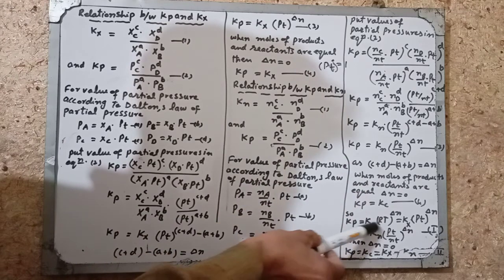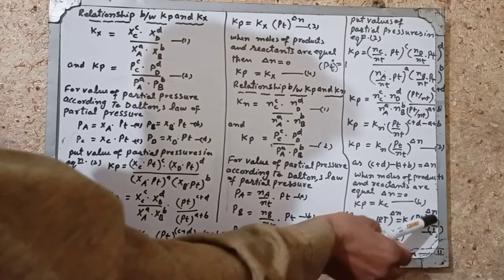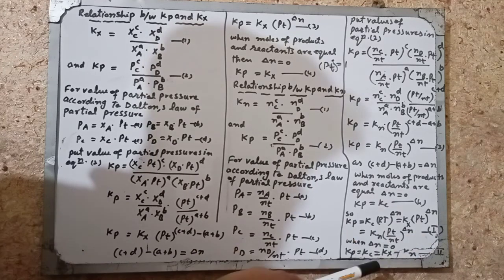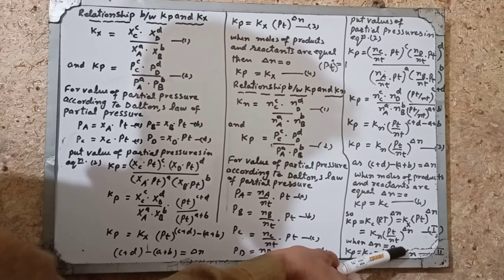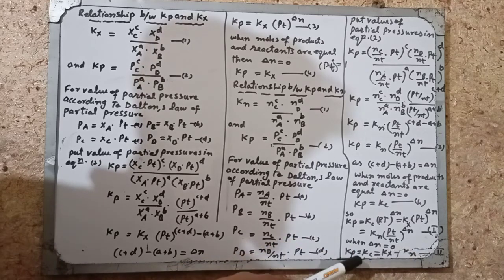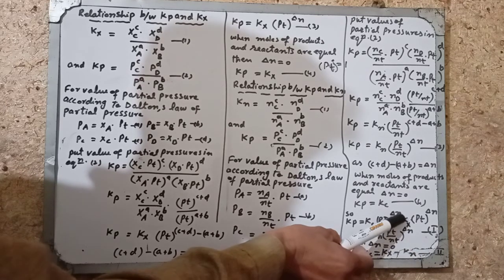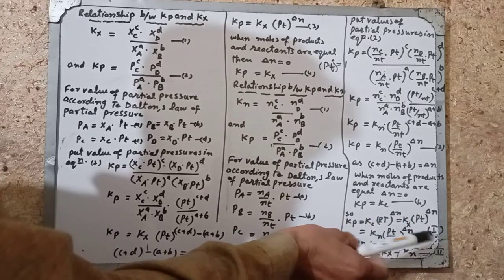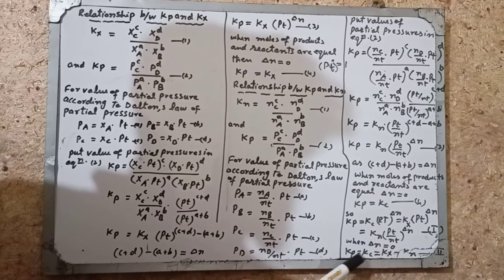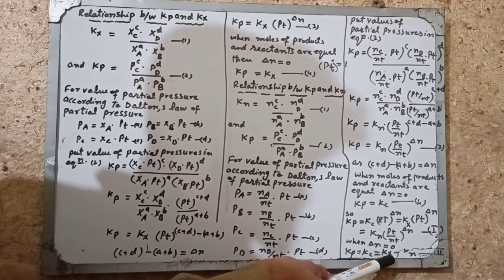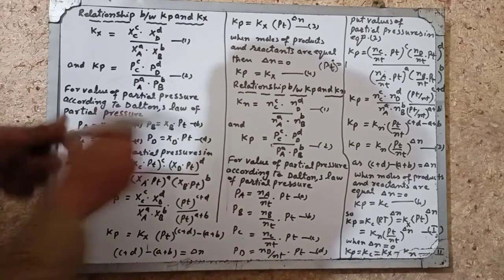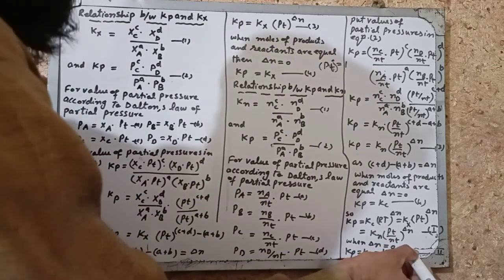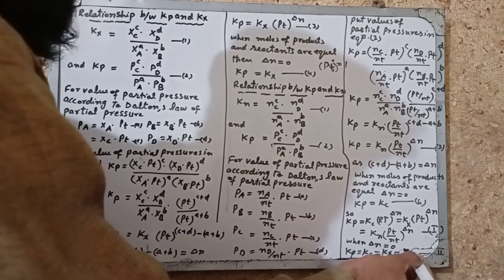All these are equal to Kp, so: Kc(RT)^(Δn) = Kx × PT^(Δn) = Kn × (PT/nT)^(Δn). When delta n = 0, because moles of products and reactants are equal, every term raised to power zero becomes one. Therefore Kp = Kc = Kx = Kn. This is the relationship between the different equilibrium constants. Thank you.